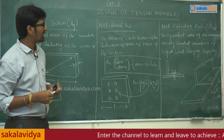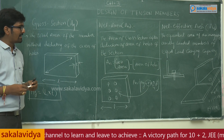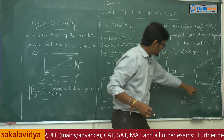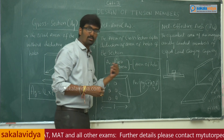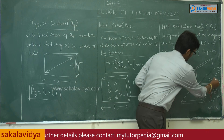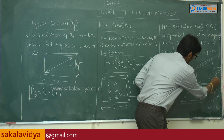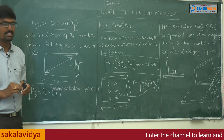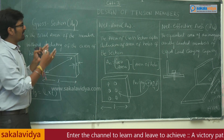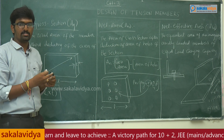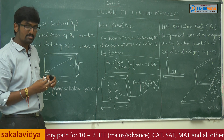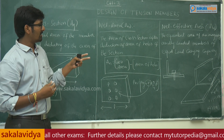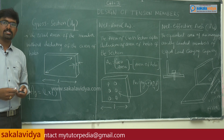Net effective area is the area of an imaginary axially loaded member of equal load-carrying capacity. For example, when an angle section is connected to a plate using a bolt, there is an extra surface projecting outside. The net effective area runs from where the bolt is jointed to the end of the connected leg. These are the very important concepts in the design of tension members.